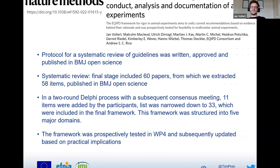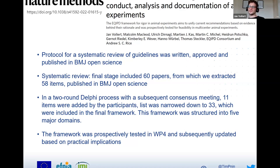We started by acknowledging that other people have set out on a similar task, so we wrote a protocol and subsequently conducted a systematic review of existing guidelines on research quality. That systematic review ended up including 60 papers, from which we extracted 58 items, and we published that systematic review as well. We then put those 58 items into a two-round Delphi process and a subsequent consensus meeting, where we assessed which items participants found most important. That helped us narrow the list down to 33 — roughly half — which we decided to include in the final framework.